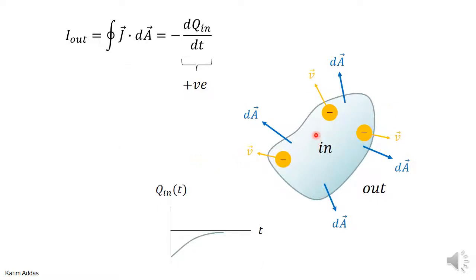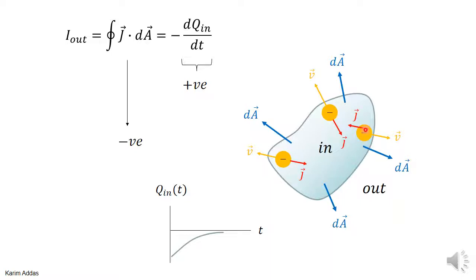If you have negative charges leaving the volume, the charge inside is initially negative and then gets less negative over time as negative charges exit. In this case dQ_in/dt is positive. Positive times negative gives a negative value, so the current going out of the volume should be negative. This is consistent because for negative charges the j vector is opposite to the velocity direction, so the dot product between j and the area vector is negative — giving a negative outward current.